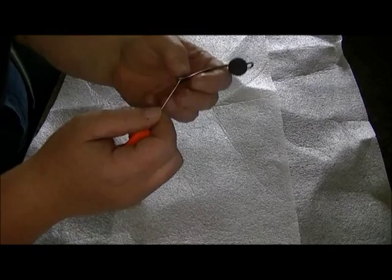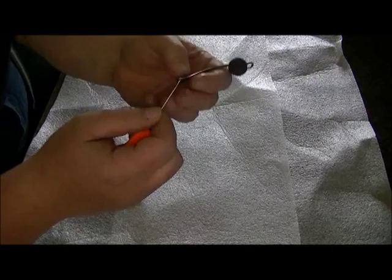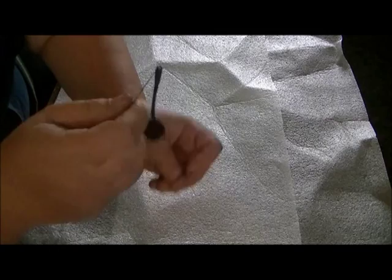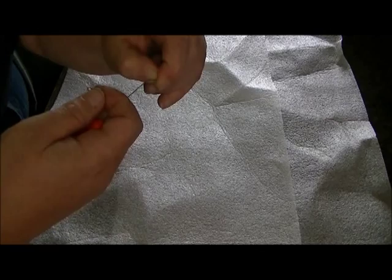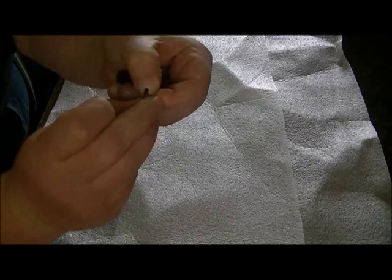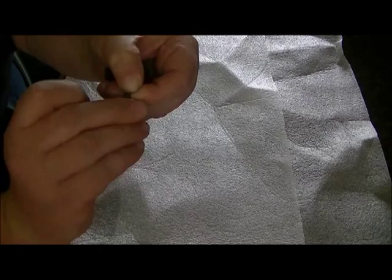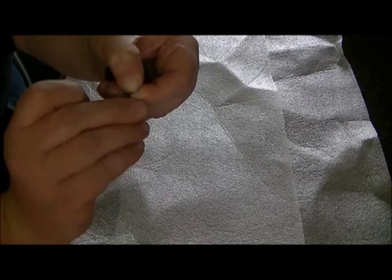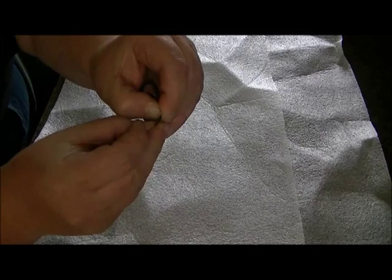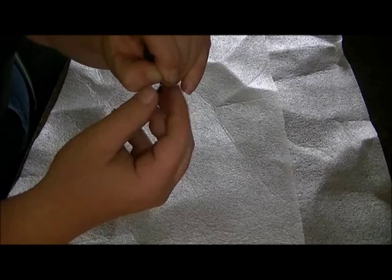Then when you've got your needle still in there, take your quick clip. Put that through the loop. It is a bit tricky. Like that, like so. And slide your rig sleeve down just over the top of the loop like so.